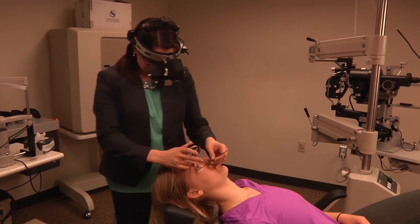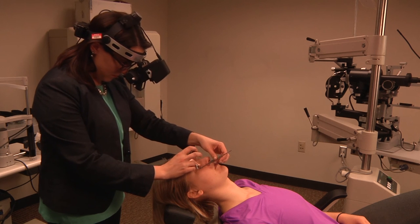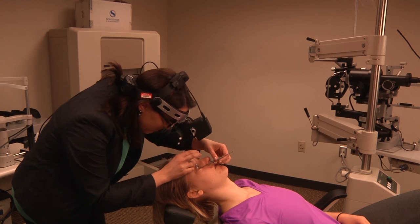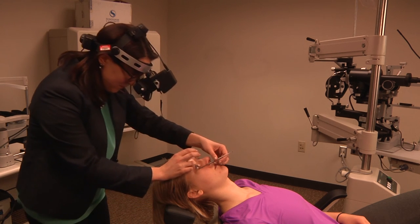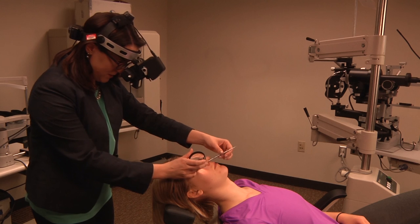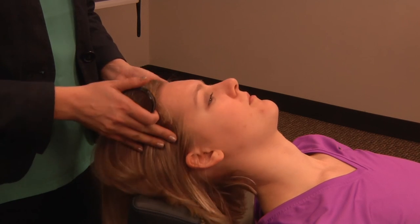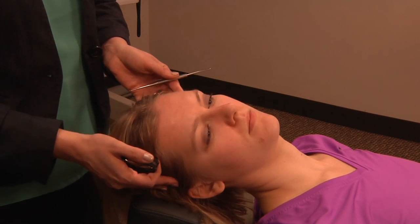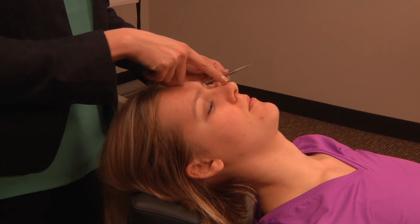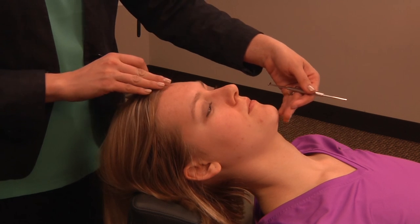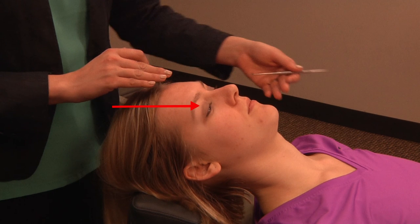If you obtain a good image and lose it, check your positioning first. It is common to move in toward the patient when an area of interest is found — stay at arm's length and maintain head positioning 180 degrees from your view. Do not be afraid to move the patient's head; a prominent nose bridge or frontal bone might require the patient to turn the head or tilt the chin. The easiest views to obtain on the globe are temporal, followed by superior, then nasal, and finally inferior.